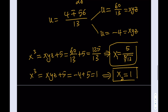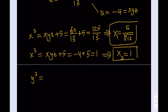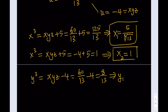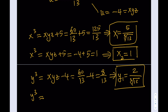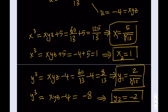Next, y cubed equals xyz minus 4. Using xyz equals 60 over 13: y cubed equals 60/13 minus 4 equals 8 over 13, so y₁ equals 2 over the cube root of 13. Using xyz equals negative 4: y cubed equals negative 8, so y₂ equals negative 2.